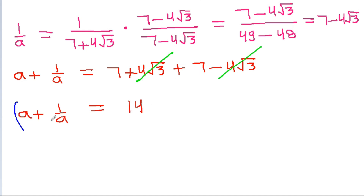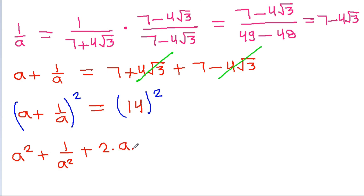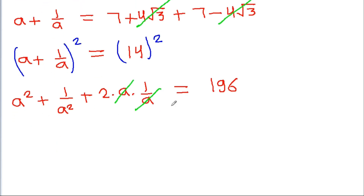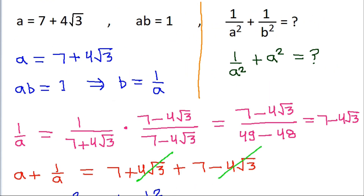If we square both sides, we get a square plus 1 by a square plus 2 times a times 1 by a is equal to 14 square, which is 196. So a square plus 1 by a square plus 2 equals 196, giving a square plus 1 by a square equals 196 minus 2, which is 194. So the answer is 194.